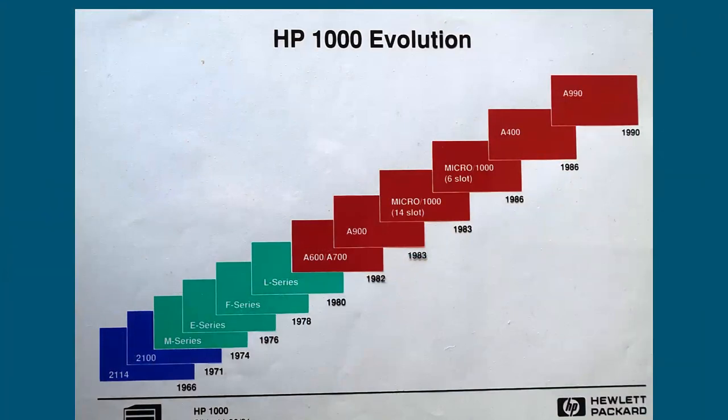One of these overhead pages illustrates the HP1000 evolution from 1966 to 1990. The 2114 was one of the earliest HP1000 models, from 1966 to 1968. It had typical 8 or 16 kilobyte ferrite coil memory. Then came the M series with semiconductor memory and a mapper system, then the M to L series, and then the A series from 1982 to 1990.